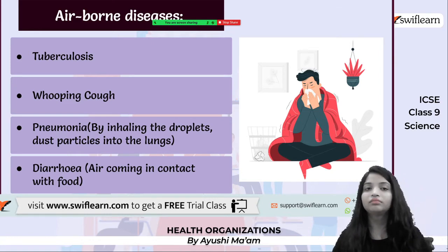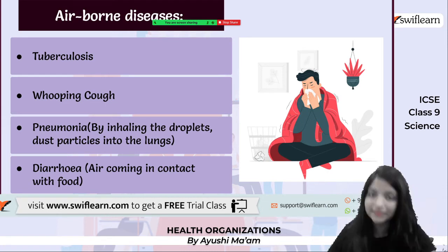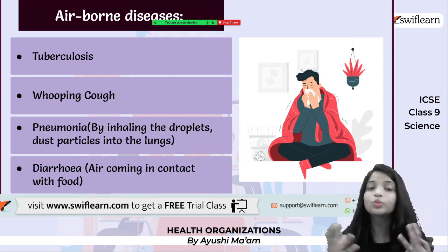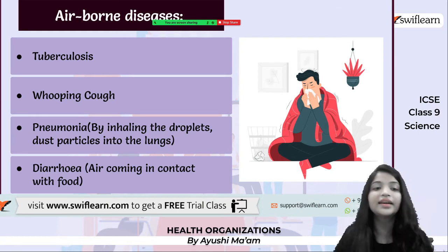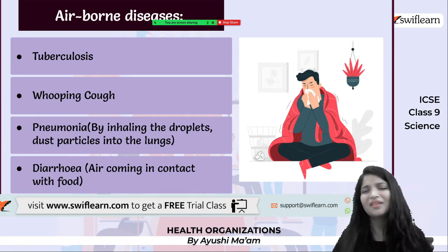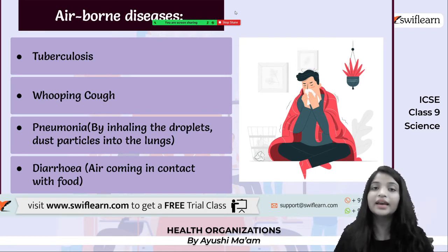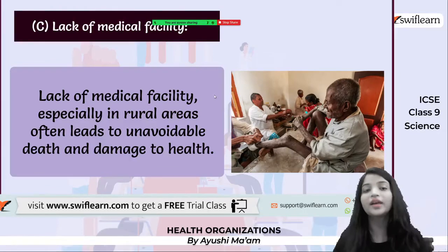Then we talk about air. Obviously, we are always breathing air inside our body because our body needs oxygen, so we are constantly breathing it. But if air is polluted, some people get allergies from pollution, so the next day they are sneezing and having whooping cough because their white blood cells cannot fight it. In those cases, airborne diseases give us tuberculosis, whooping cough, pneumonia, and diarrhea — all because of airborne diseases.